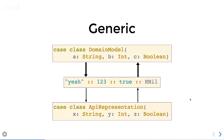Using HLists you can do things like Generic, where you take a case class — in this case our domain model class with a String, an Int, and a Boolean — and convert it into a generic representation, which is an HList. You've stripped away the fact that it's a case class called DomainModel; all you care about is the String, the Int, and the Boolean. Then you can convert it into another case class with a different name, say APIRepresentation. Even with different field names, as long as it's got a String, an Int, and a Boolean in the right order, you can convert between them by going through this generic HList representation.